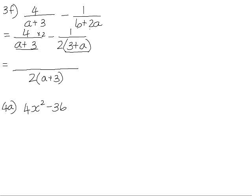We need to multiply the first fraction by 2 over 2, and the second fraction already shares that lowest common denominator, so we don't need to multiply by anything. That gives us 8 minus 1, and if we simplify the numerator, 8 minus 1 is 7, and our denominator is 2 into a plus 3.